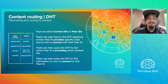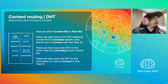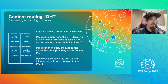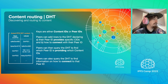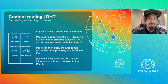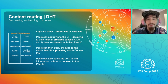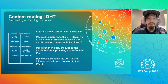Now that we have a database maintained collectively by all the peers in the system, how does IPFS use it? When content is added to IPFS, a peer will insert one row into the DHT. Keys are either content IDs or peer IDs. Peers can add rows to the DHT declaring (a) their peer ID provides specific CIDs and (b) how to connect with their peer ID. Peers can then query the DHT to find which peer ID is providing which content IDs, and also query the DHT to find information on how to connect to that peer ID. Any peer that wants to download some content will first query the DHT to find which peer ID is providing the content, then query the DHT again to find information on how to connect to that peer ID. At the end of the DHT queries, a peer knows who has the content it wants and where to get it.